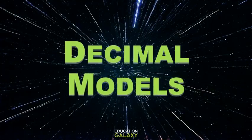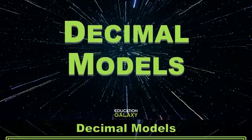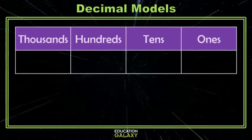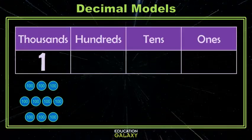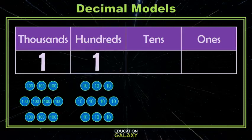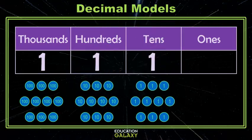Hey everybody, today we're talking about decimal models. Let's take a visit to the past where we learned about the base 10 number system. We learned that there are 10 hundreds in 1,000, and there are 10 tens in 100, and there are 10 ones in 10.